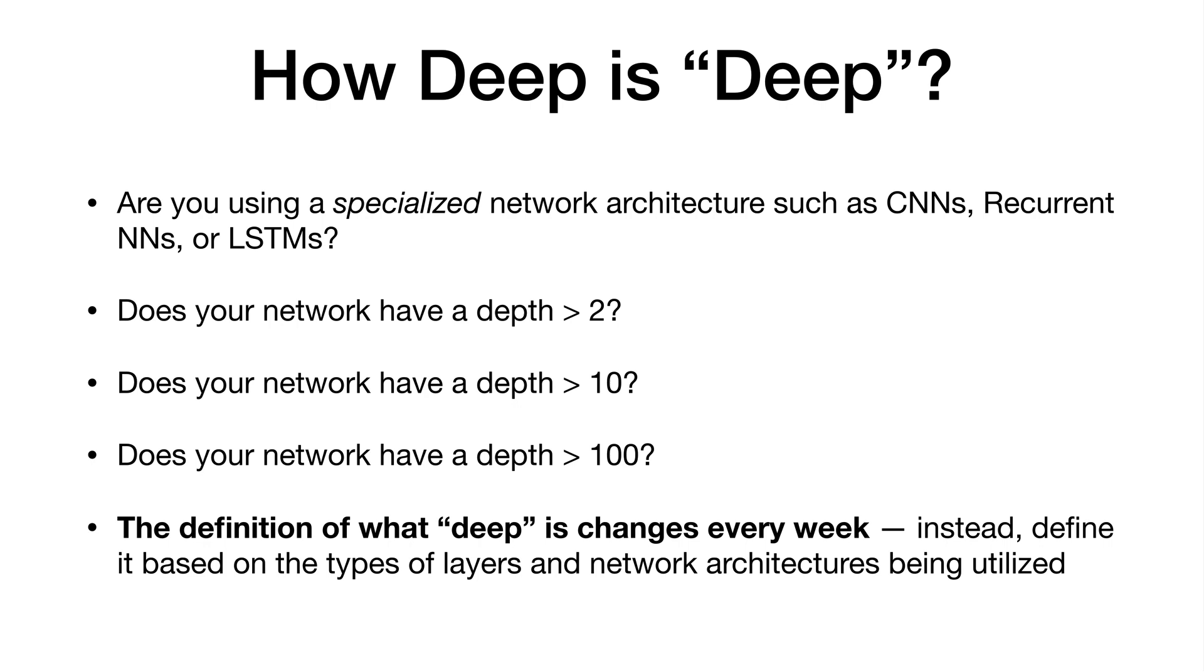We've looked at creating deeper networks, we've looked at creating wider networks, we've looked at creating wider and deeper networks. So instead of worrying about how deep, deep actually is, instead define it based off the types of layers and the network architectures being utilized. That is, in my opinion, the best way to consider what is deep learning versus what is standard neural networks. So don't get too caught up in the buzzwords, just learn about the network architectures themselves. And then from there, you can consider it deeper.